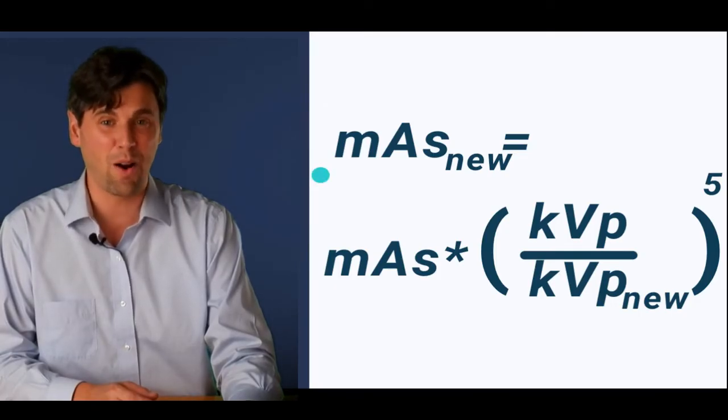So you're going to take the original MAS and you're going to multiply by the ratio of KVP divided by KVP new to the fifth power. Even us physics guys like to sit around and think about raising things to the fifth power. So it's very useful to have an approximation for this relationship. And that is the 15% rule.